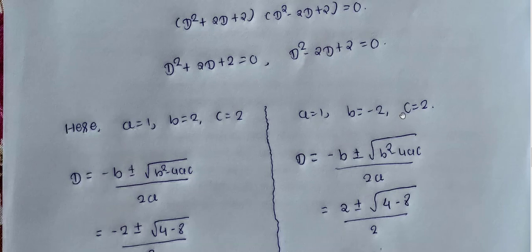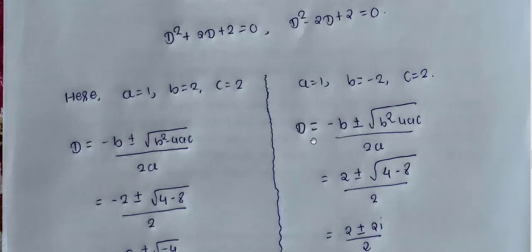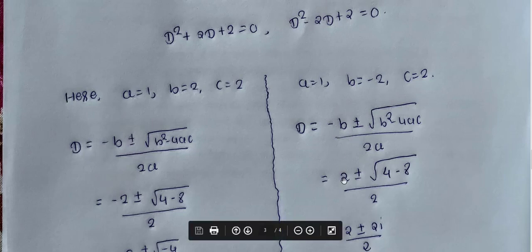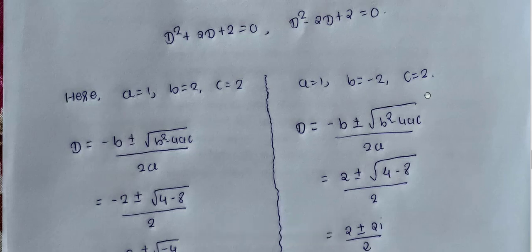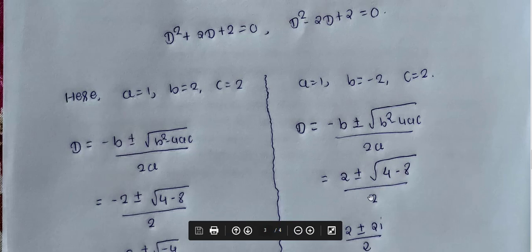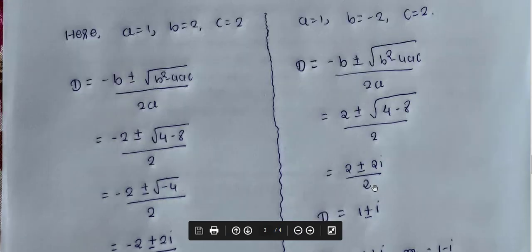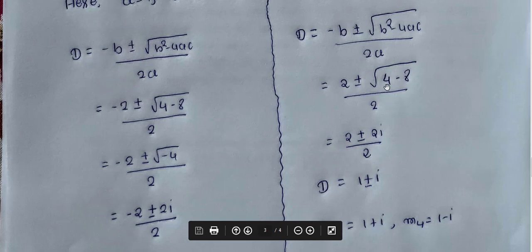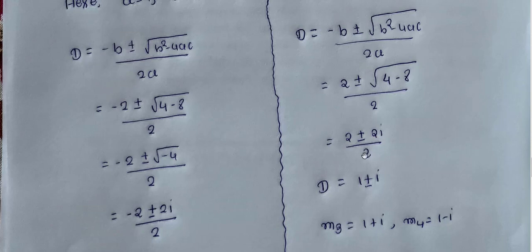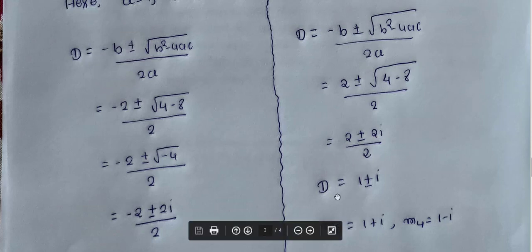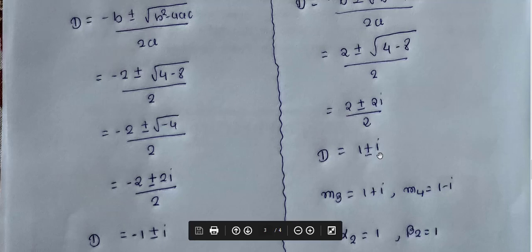For d² - 2d + 2 = 0, with a=1, b=-2, c=2: d = (2 ± √(4-8)) / 2 = (2 ± √(-4)) / 2 = (2 ± 2i) / 2 = 1 ± i.